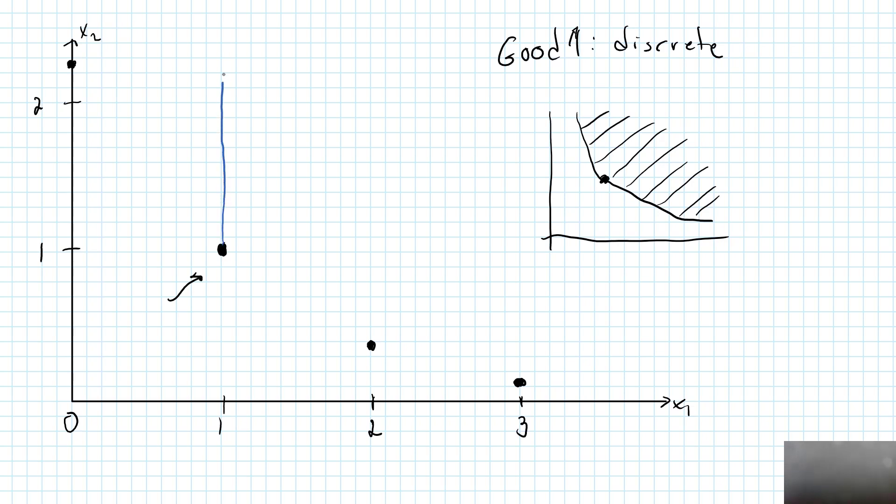So all bundles on this straight line will be strictly better than the bundles on my indifference curve, and they are part of the weakly preferred set. The same is true if I start with a bundle where I consume two units of good 1.